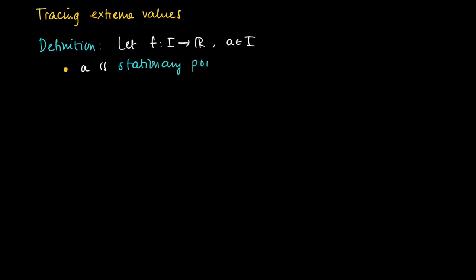Then a is called a stationary point if the function has a derivative in a, and its derivative should be 0.